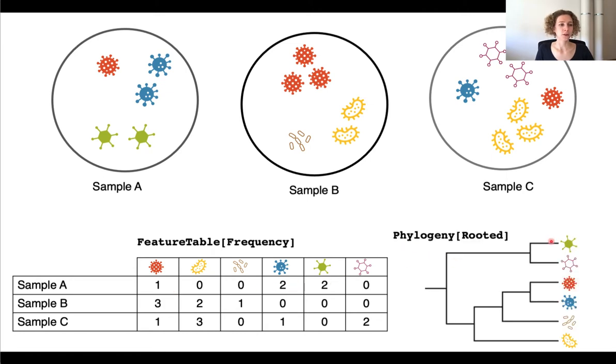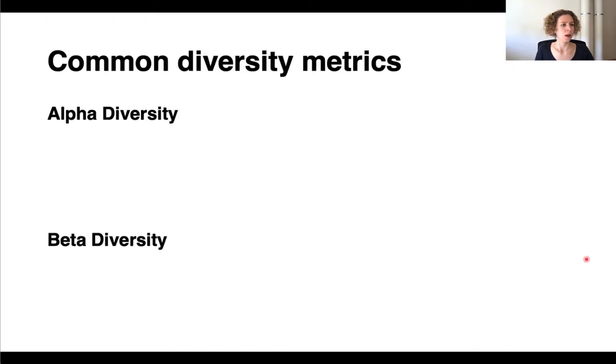And then we also have the phylogeny, an artifact that is a phylogeny rooted. And just as a disclaimer, here in this example I have been talking about different species, but of course we're actually working with amplicon sequencing variants, so ASVs, or OTUs, so operational taxonomic units, which are of course only proxies for species.